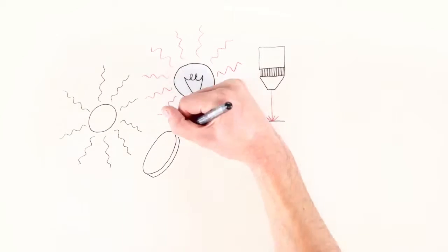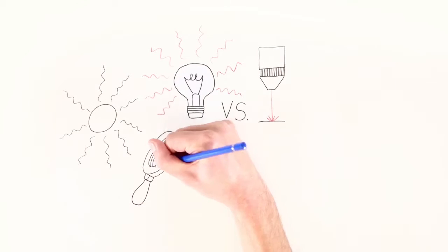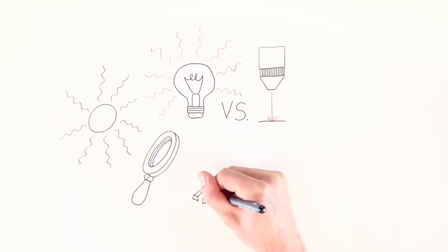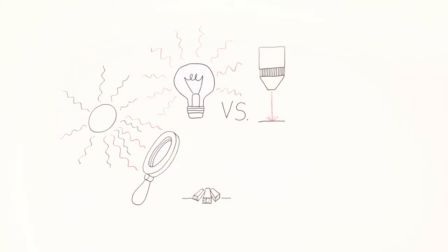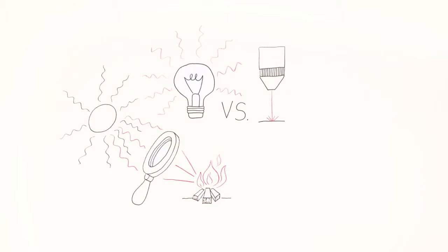The light bulb radiates in all directions, whereas the beam of the laser is directed. Laser light is coherent, so the wave trains are much longer than those from a light bulb.